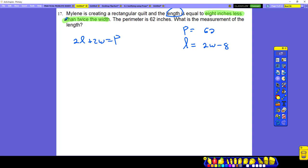So now I'm going to write this. Length is what? Two W. Okay. It says here that we have eight inches less than twice the width. Again, if you have less than, you have to read backwards.